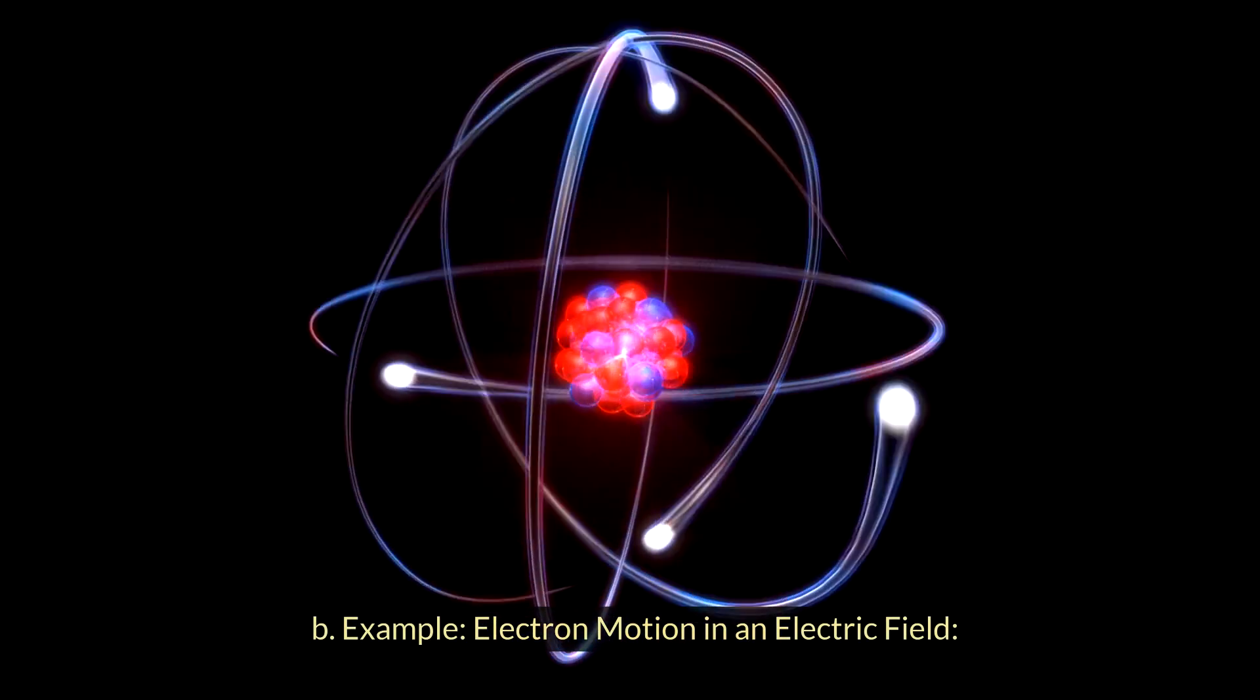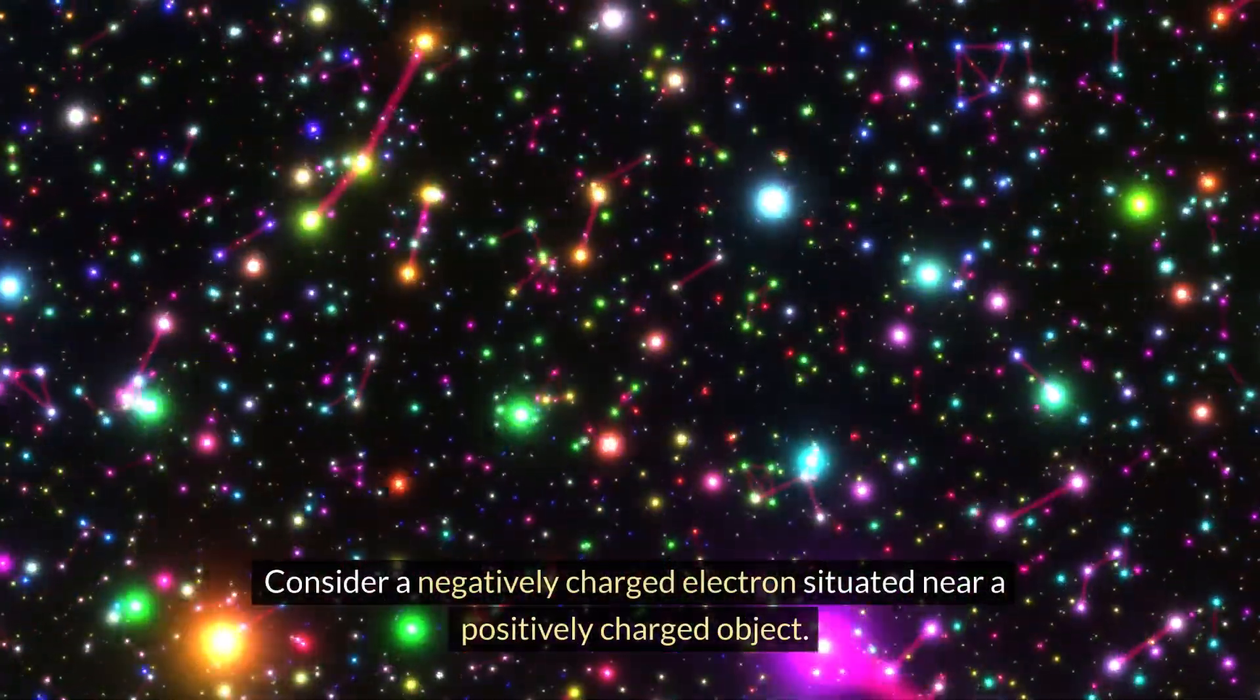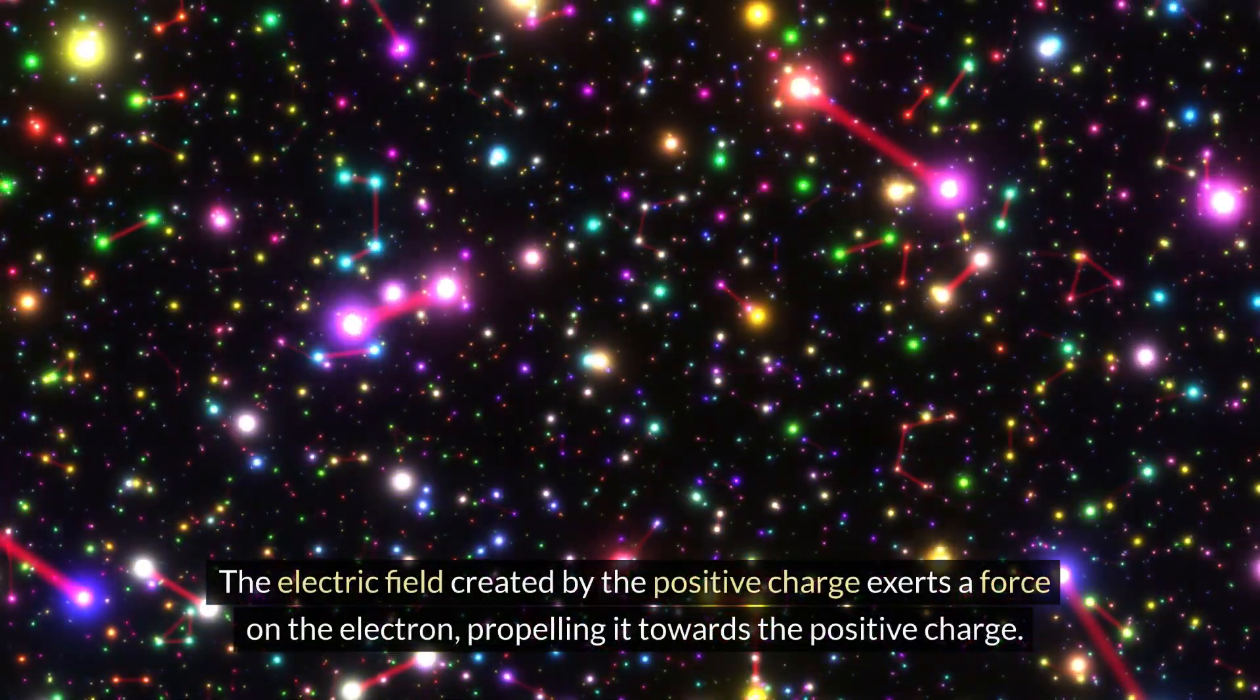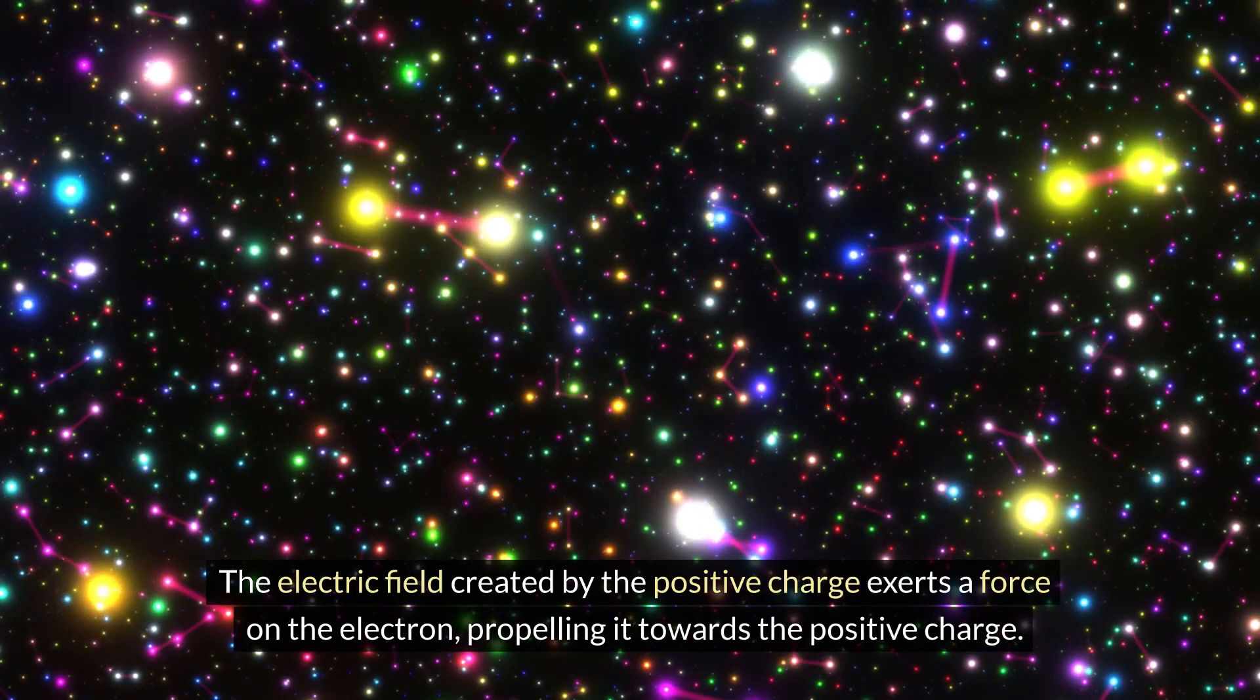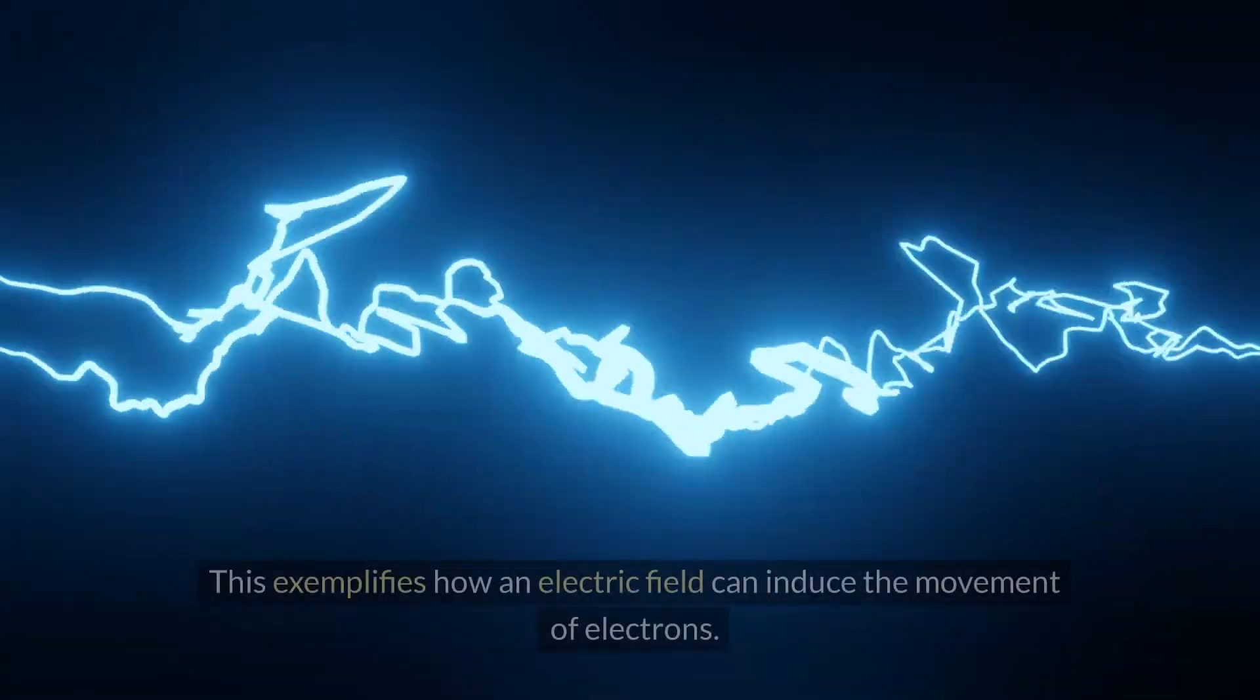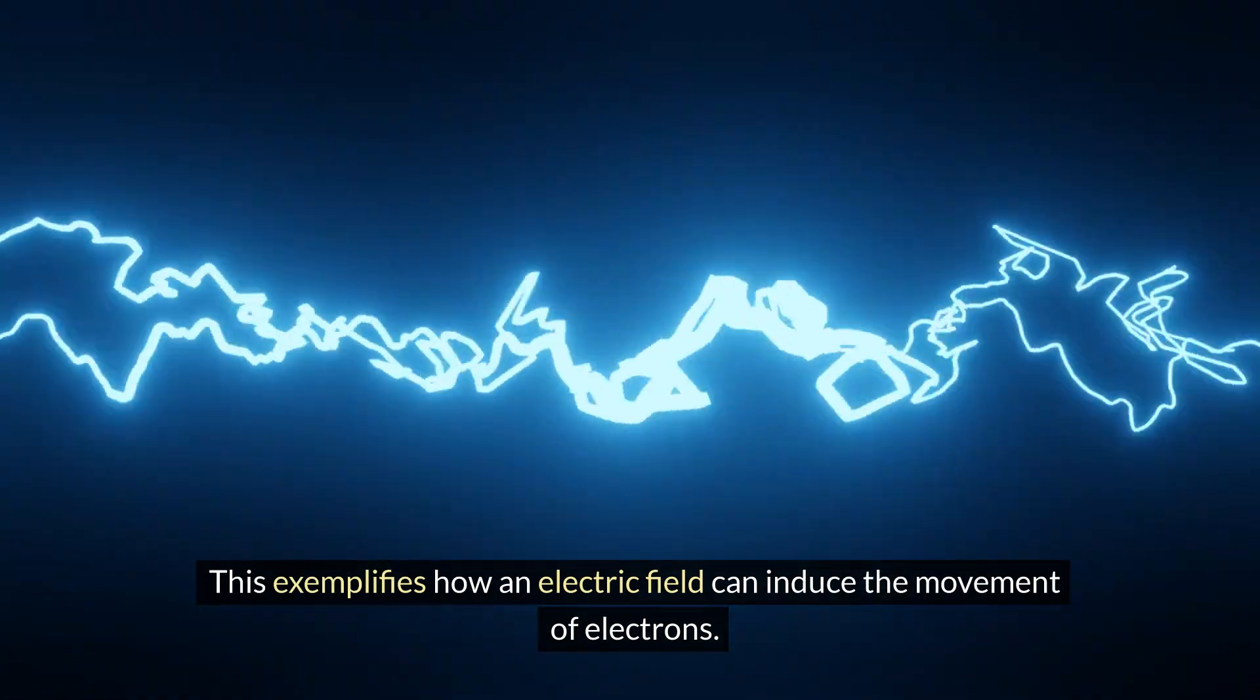Example: Electron motion in an electric field. Consider a negatively charged electron situated near a positively charged object. The electric field created by the positive charge exerts a force on the electron, propelling it towards the positive charge. This exemplifies how an electric field can induce the movement of electrons.